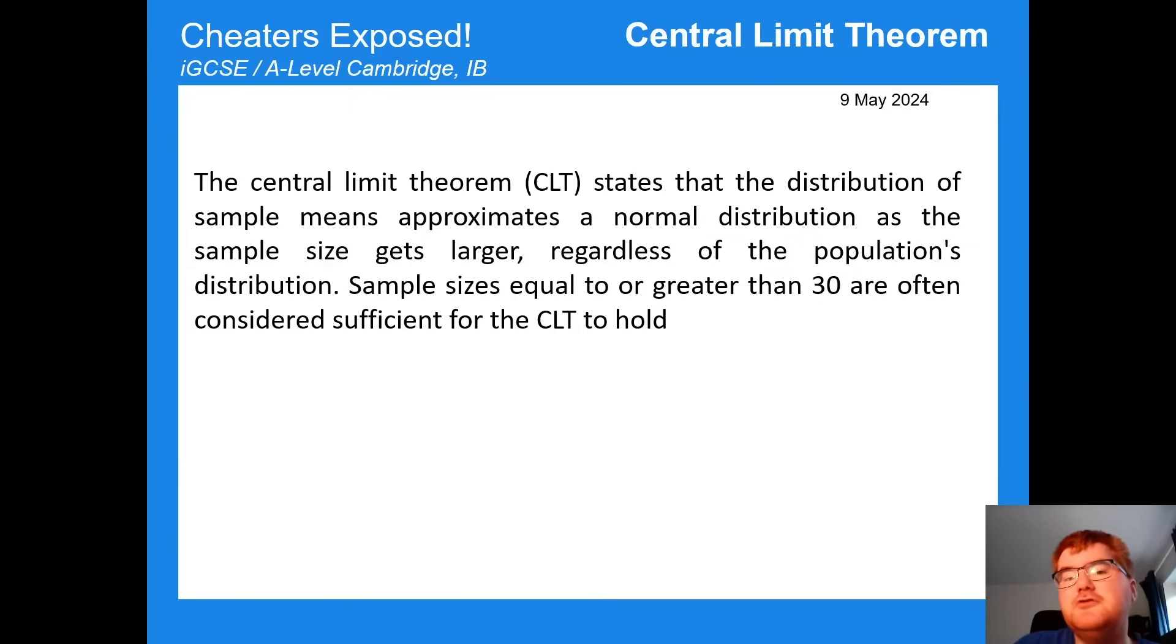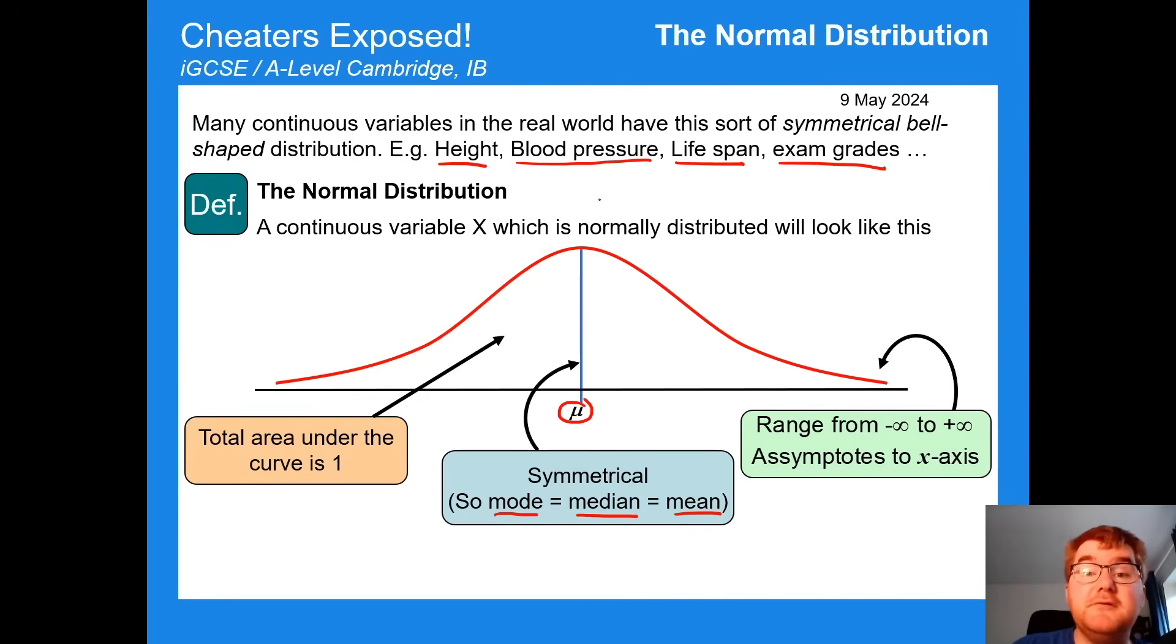We also need to be aware of something called the central limit theorem. If you do IB high-level applications, you're probably familiar with this concept. And you can see it's quite a confusing definition here. But let's just keep it very simple, which is if you have a sample size equal to or greater than 30, then basically the distribution of exam grades, for example, will look like this.